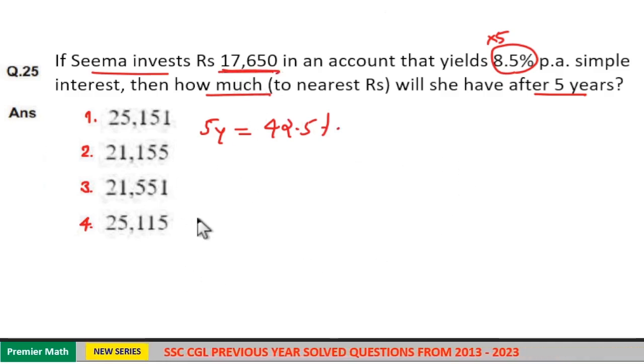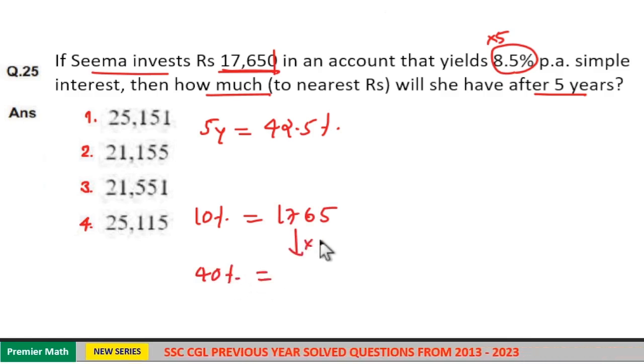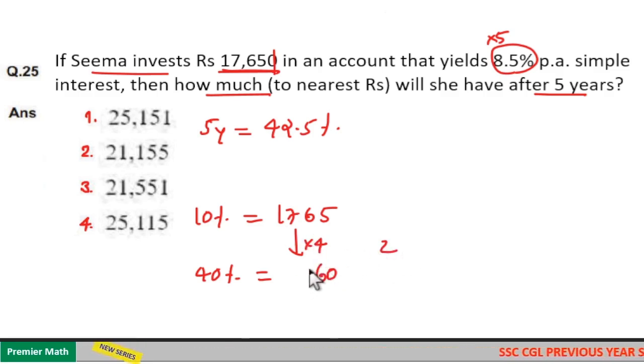Here, 10% of 17,650 is equal to 1,765. Then, 40% is equal to 1,765 into 4. 5 into 4 is 20. 6 into 4 is 24 plus 2 is 26. 7 into 4 is 28 plus 2 is 30. 4 into 1 plus 3 is 7. So, 40% is 7,060.